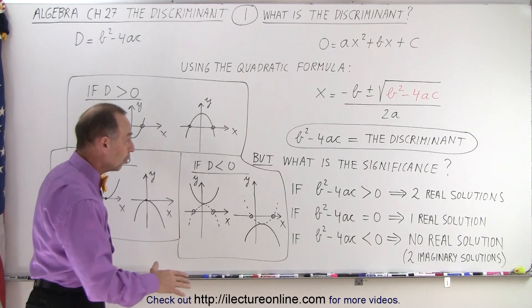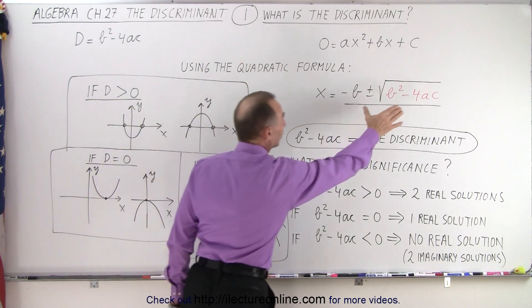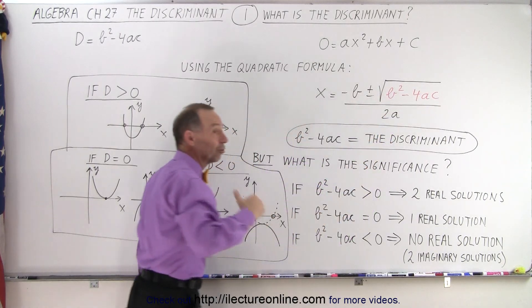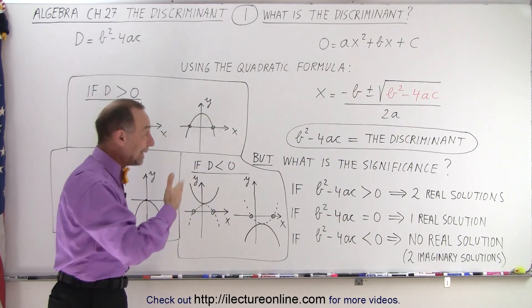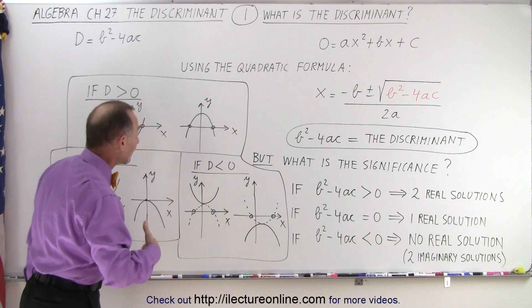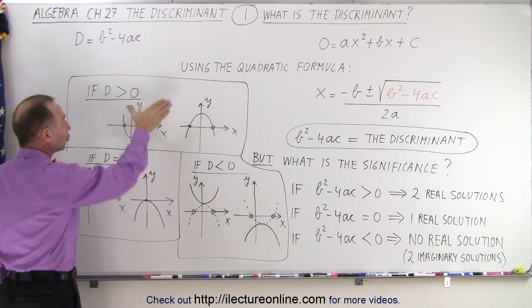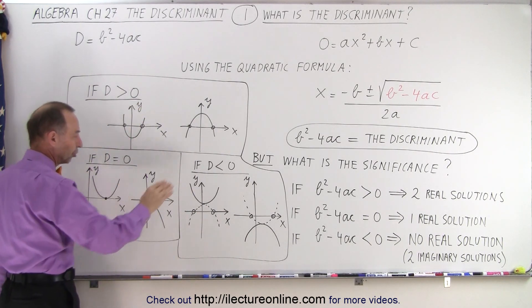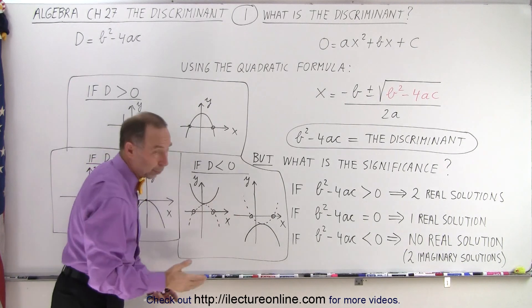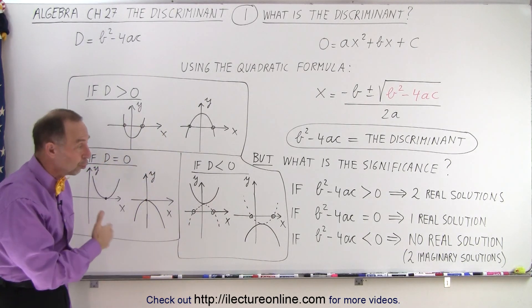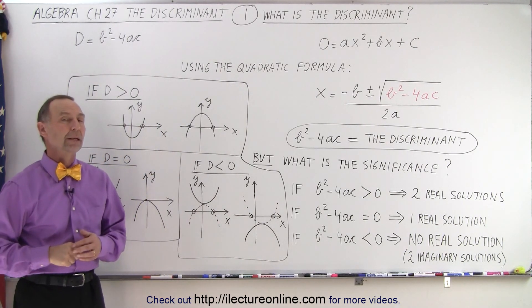So by calculating what the discriminant is equal to and discovering that it's a positive number, equal to zero, or negative number, we can then quickly conclude that there's two real solutions, one real solution, or no real solution, in other words two imaginary solutions to our quadratic equation.